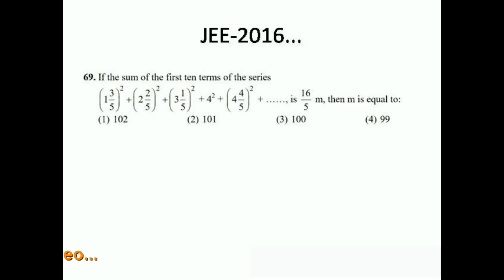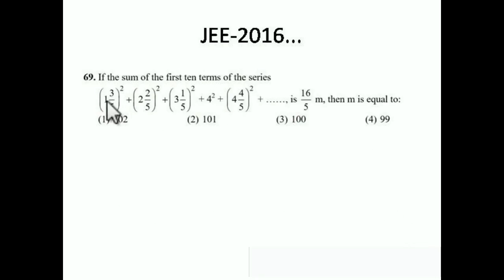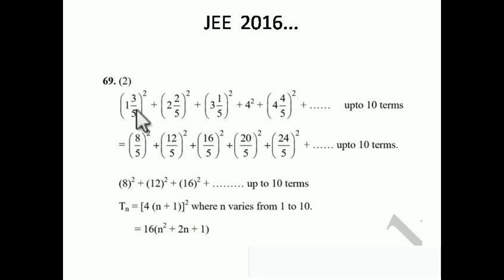So let's see the solution. What is given is the summation of this series up to 10 terms. The first term is 1 + 3/5, the second is 2 + 2/5, the third is 3 + 1/5. If we take the LCM then: 5·1 + 3 = 8/5, then 5·2 + 2 = 12/5, then 16/5, 20/5, 24/5 and so on up to 10 terms. The fraction part simplifies as 1 + 3/5 = 8/5, and 2 + 2/5 = 12/5.